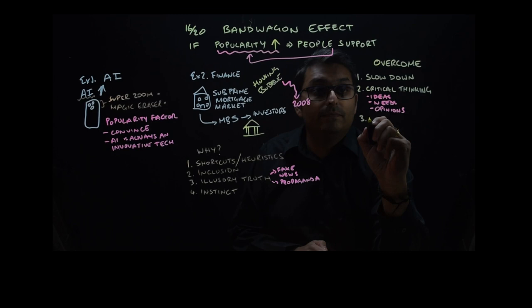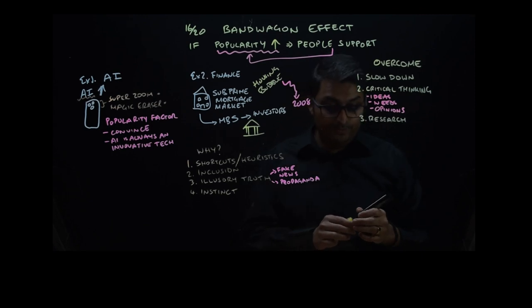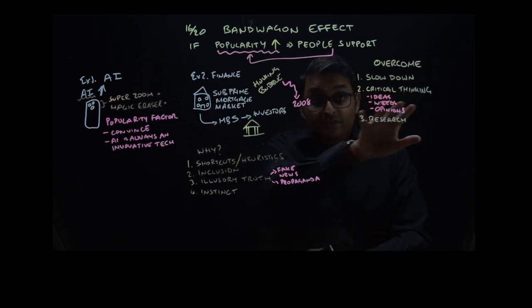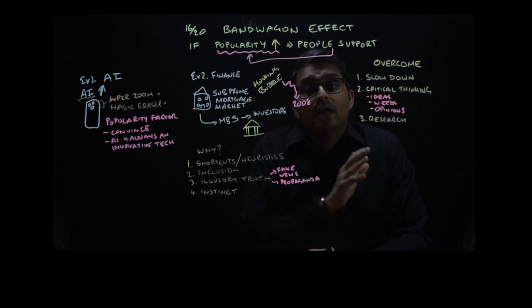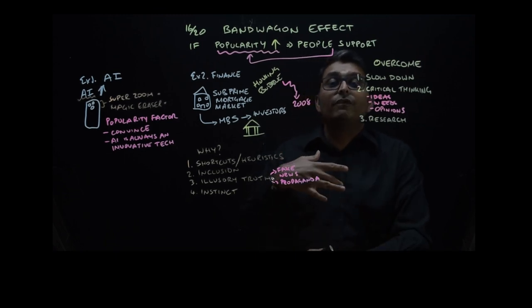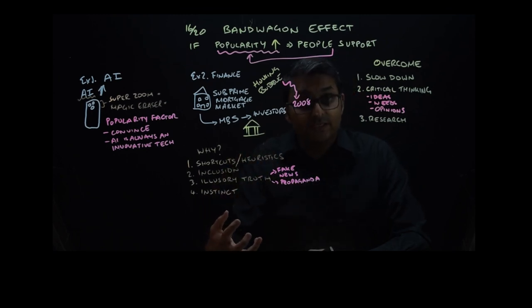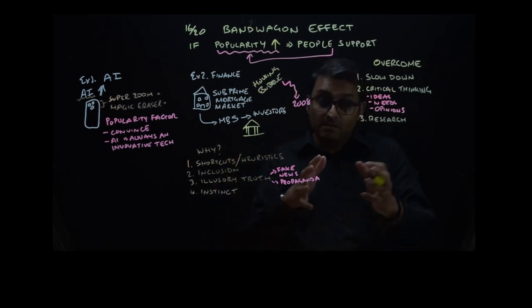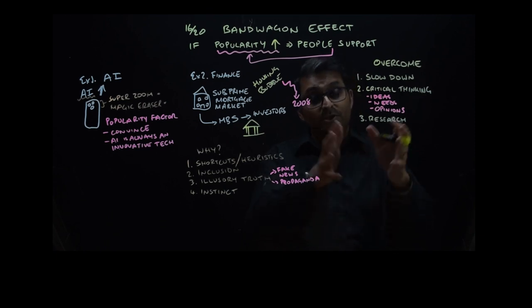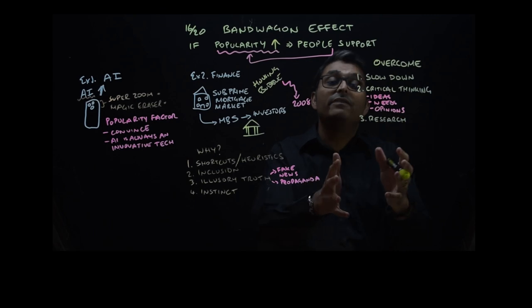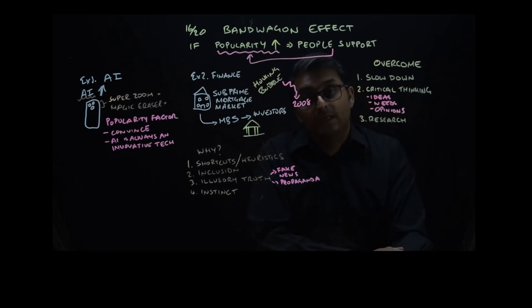Number three: research. In order to help with number two, with the critical thinking, it will be beneficial to look for reliable sources of information which are independent and that do not profit based on your choices. So by doing this research, you can make or arrive at a more informed decision.